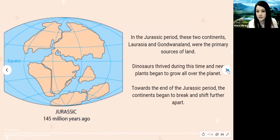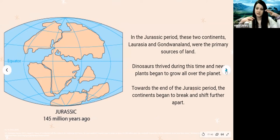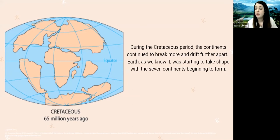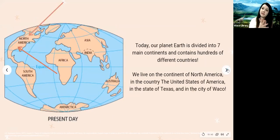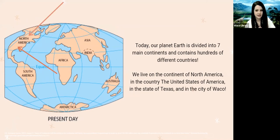Dinosaurs thrived during this period and new plants began to grow all over the planet. The continents continued to shift and break apart during the Jurassic period, and then during the Cretaceous period they drifted further apart and earth as we know it began to take shape with the seven continents forming. Today our planet is divided into seven continents: North America, South America, Africa, Asia, Australia, Antarctica, and Europe. We live on the continent of North America, in the United States of America, in the state of Texas, in the city of Waco.